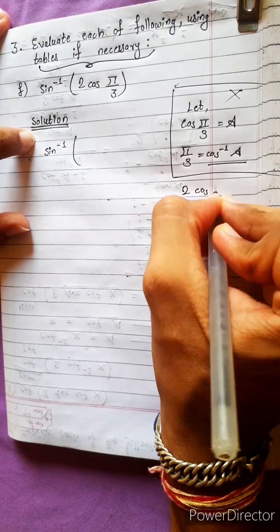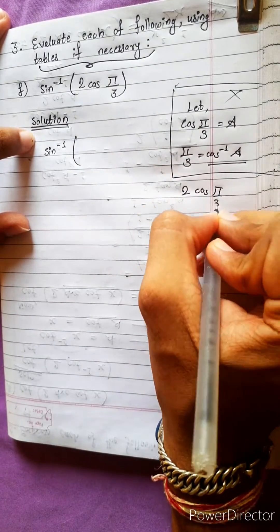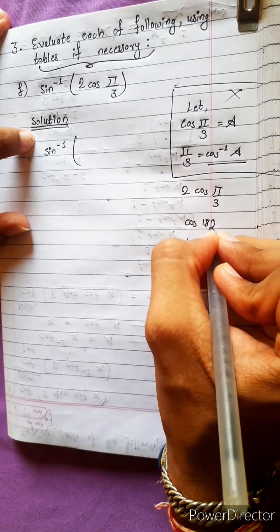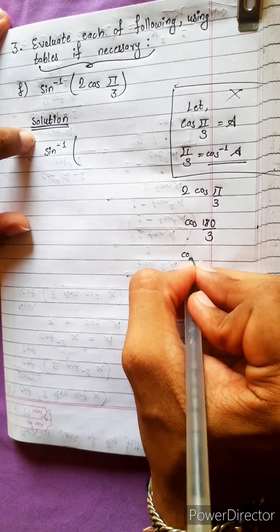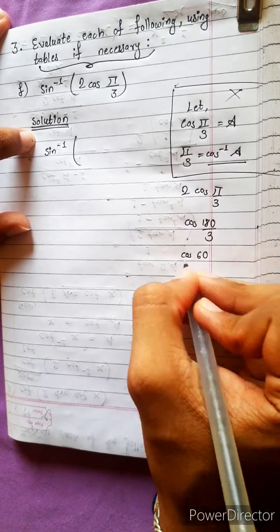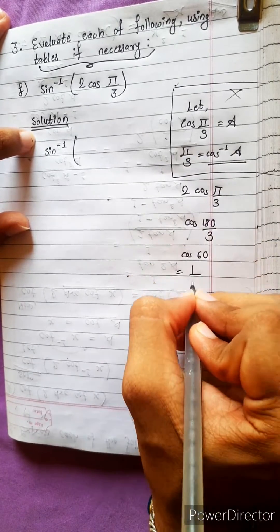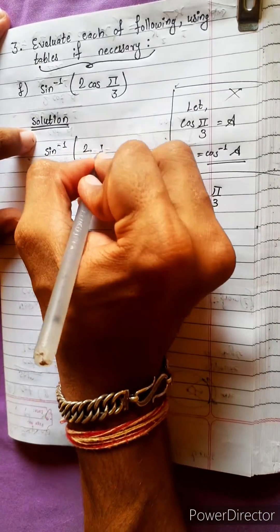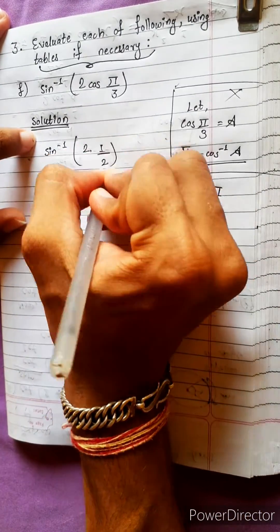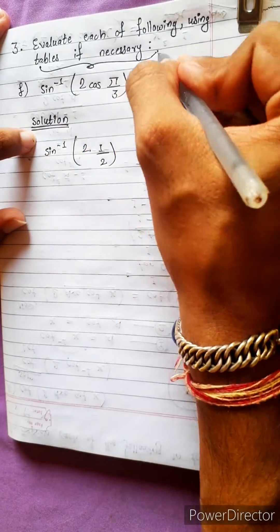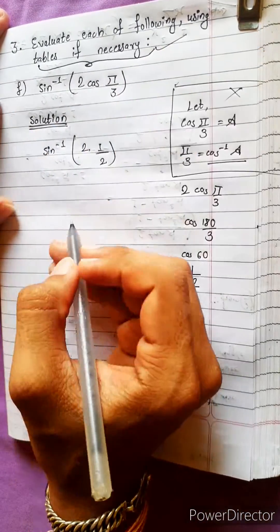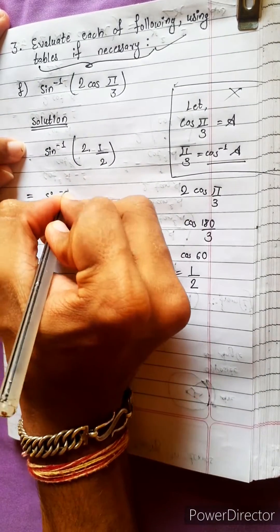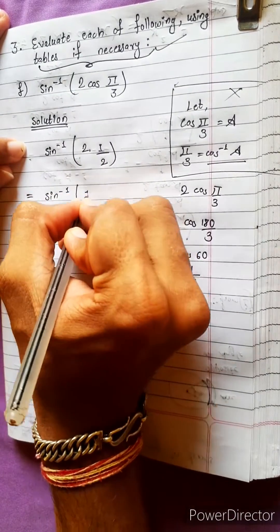Here: 2cos(π/3) = cos(180/3) = cos(60°). cos(60°) = 1/2. So 2 times 1/2 equals 1. Using tables if necessary, this equals sin⁻¹(1).